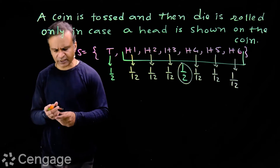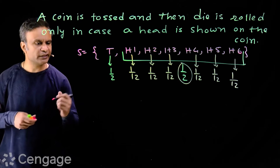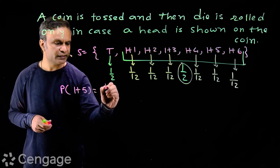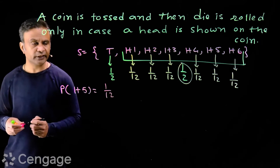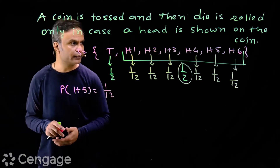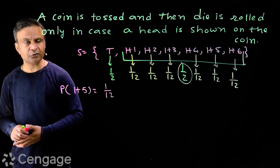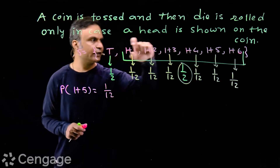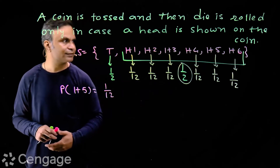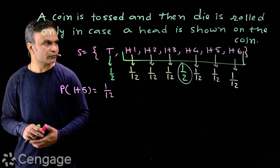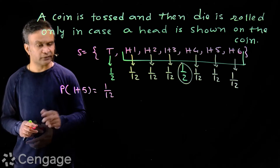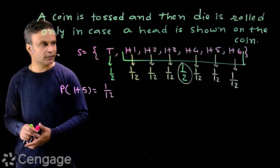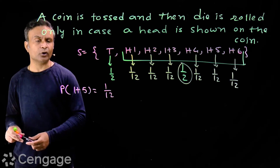Now we have a question: what is the probability of event H5? The probability is 1 upon 12. If you don't do this with attention, what might you answer? 1 upon 7 — generally students do this. They write 7 elements in the sample space, consider all events to be equally likely, and write P(H5) as 1 upon 7, which is wrong. The actual value is 1 upon 12.